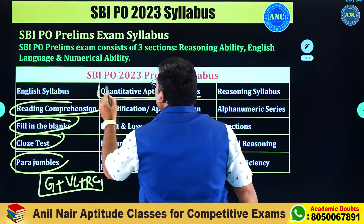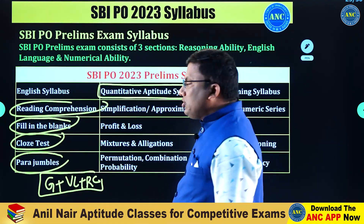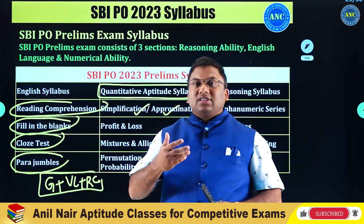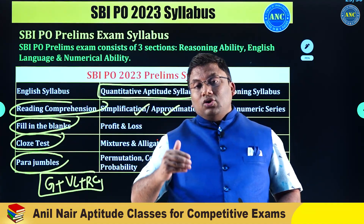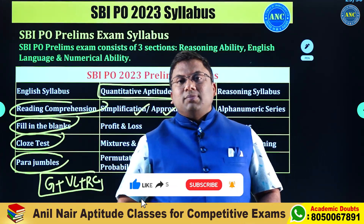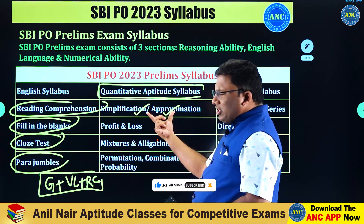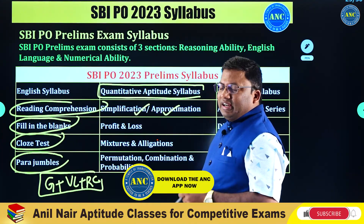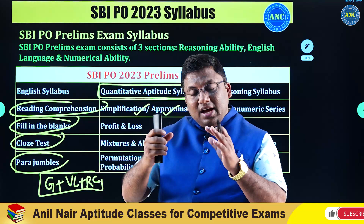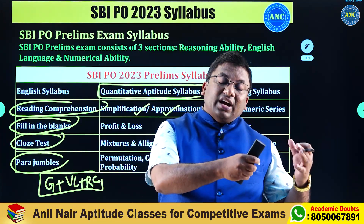Under quantitative aptitude, in any bank-related examination, the most important topics are in number system: simplification and approximation. When solving simplification, you need to know the unit digit concept, last two digits concept, divisibility rules for prime numbers, and when to use digital sum. Arithmetic topics include the percentage family — percentage, profit/loss, discount, simple interest, compound interest, and installment problems.